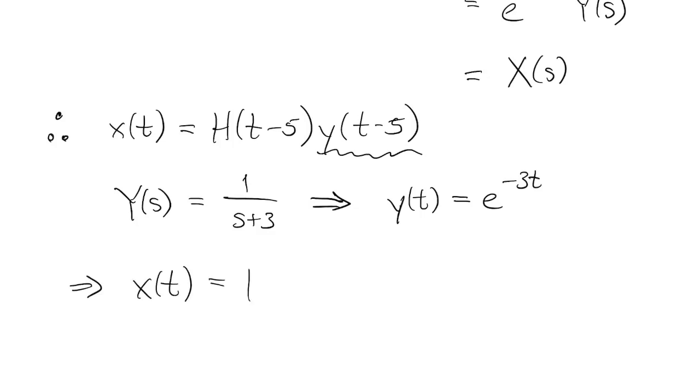Finally then, x of t is the step function at t minus 5 times y at t minus 5, which is t replaced by t minus 5.